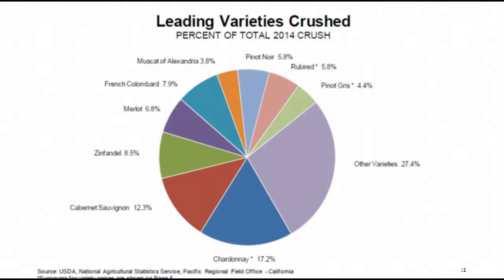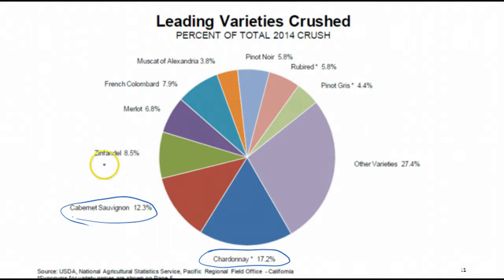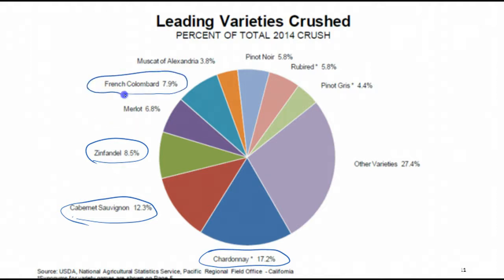If you look at what we crushed statewide, Chardonnay is the winner at 17.2% of crushed tons. Cabernet Sauvignon comes in next, then Zinfandel — both white Zin and red Zin. Next would be French Colombard, grown primarily in the Central Valley for bulk white wines, and then Merlot. Pinot Noir comes in next — it still hasn't caught Merlot, but there's a lot more Pinot Noir planted than there was 15 years ago.